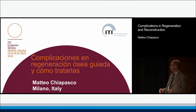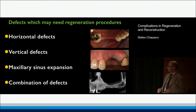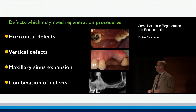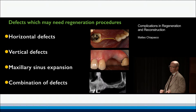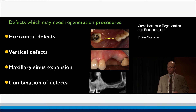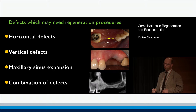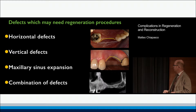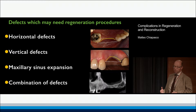Which are the defects that may need regeneration procedures? We can have horizontal defects — as is well known, they can represent an obstacle to placing implants of a proper dimension, and we always want to have the proper profile. We can also have vertical defects, which again can interfere with the desired prosthetic outcome.